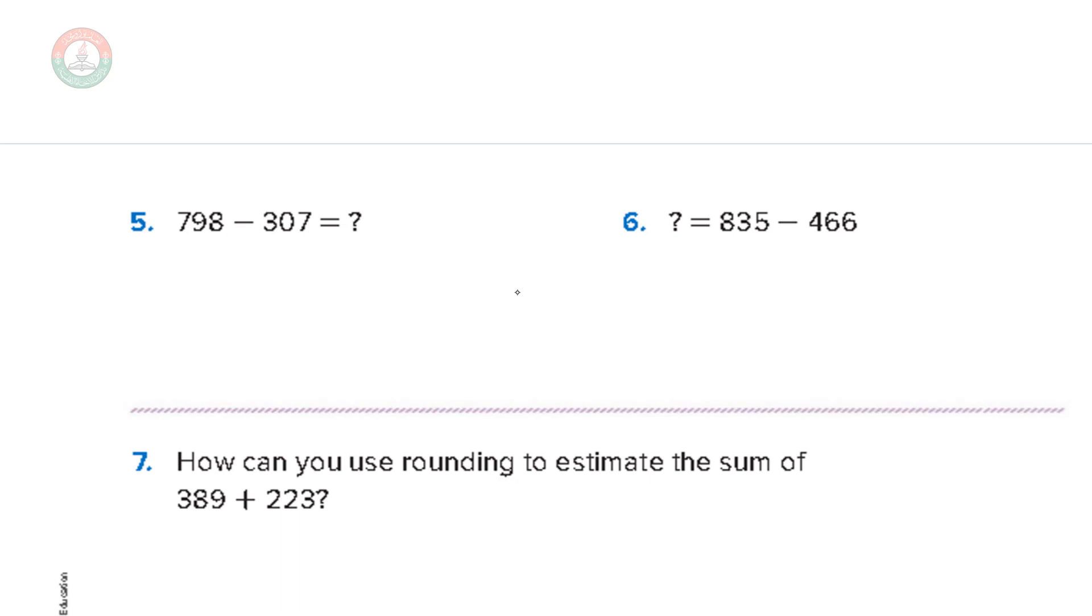Here in number 5, 798 minus 307. I can quickly here use rounding. I'll circle the 7, underline the 9. The 9 is strong digit, so the 700 will go to 800. Minus, I'll circle here also the 3, underline the 0. The 0 is weak, so I'll keep the 3 as 300. So 800 minus 300, this is 500.